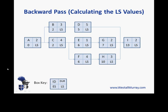Now let's do our backward pass. Starting with I, because we're going backwards, we set the late start to be the same as the early start — so we put 13 in there. Working backwards, for D, G, and H we use the formula: late start of the current task minus the duration of the predecessor. For D, the late start of I is 13, the duration of D is 5, so we subtract — the late start of D is 8. Likewise we calculate those late starts for G and H.